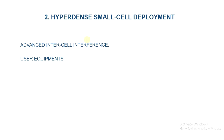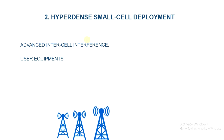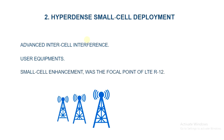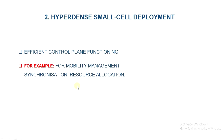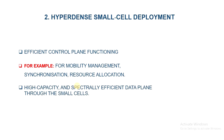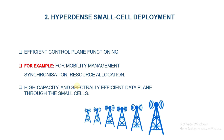Small cell enhancement was the focal point of LTE Release 12, where a new carrier type was introduced to assist small cells hosted by the macro microcell. This allows more efficient control plane functioning — for example, for mobility management, synchronization, resource allocation, etc. — through the micro layer, while providing a high-capacity and spectrally efficient data plane through the small cells.